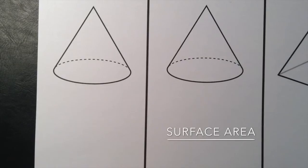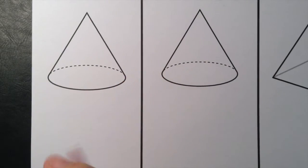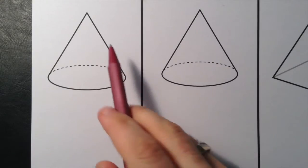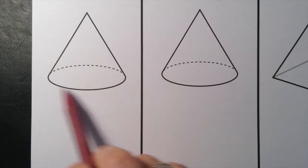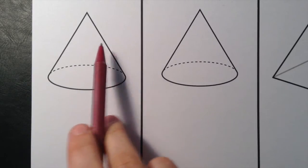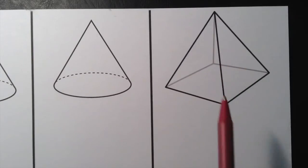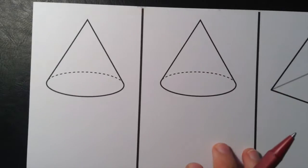Hi there and welcome to another short little video here by Mr A. Today we're looking at the surface area of different solids and spheres — 3D shapes, 3D objects. We're finding out how much space there is around the outside of different shapes. We're going to be looking at some cones, how to work out the surface area of a cone, some square-based pyramids, and also some spheres. Let's get going.